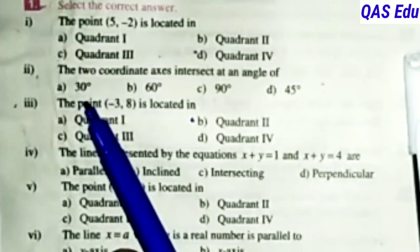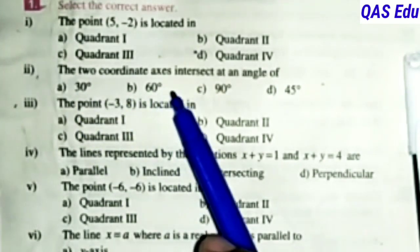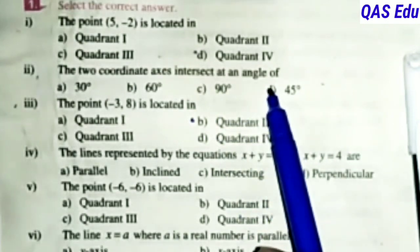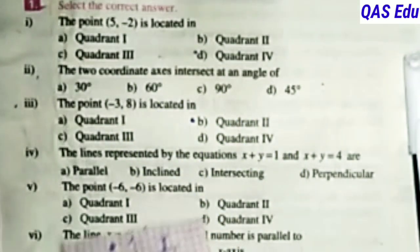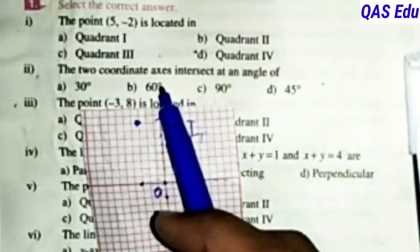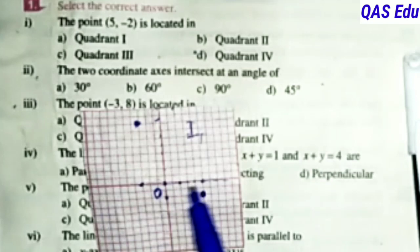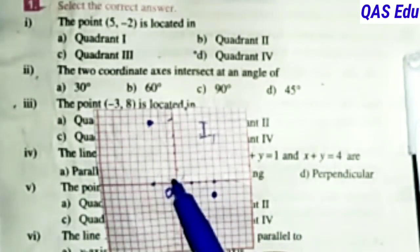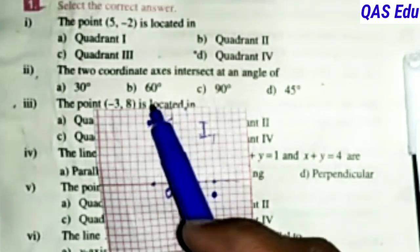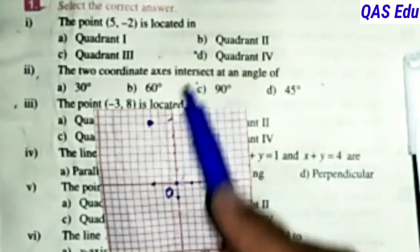The two coordinate axes intersect at an angle of dash. X-axis and y-axis intersect at 90 degree angle. They are perpendicular lines.